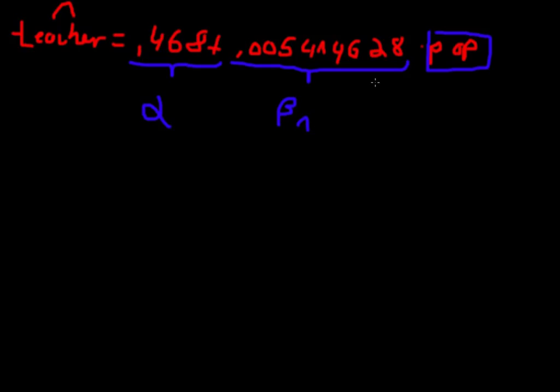But this equation tells us much more than that. It also says that for an increase of one unit of pop, teacher increases by 0.0054 units. In plain English, that would mean if you increase the population by 1000 or one unit, you'd also increase the number of teachers by 0.0054 thousands, or 5.4 teachers. This is what this equation says.